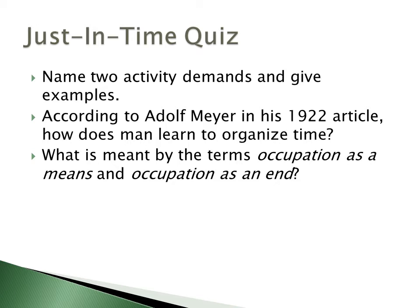What is meant by occupation as a means and occupation as an end? This can be found in your O'Brien and Hussey reading, chapter three. Occupational therapists use occupation as a way to engage people in activities that help them heal or recover. We also use occupation as an end because it is the goal of treatment — we want someone to engage in their desired occupations by the time they finish treatment.